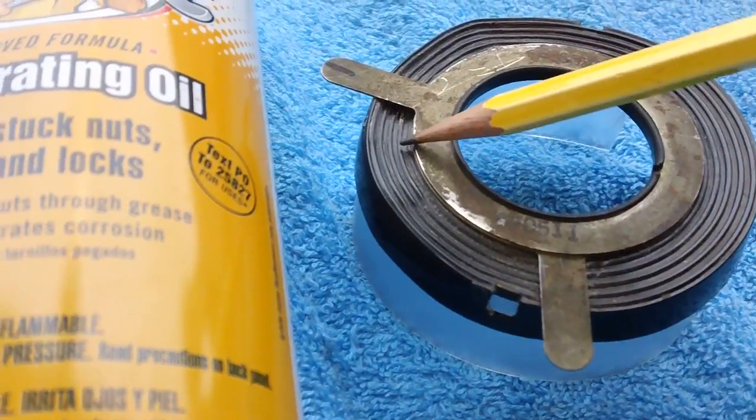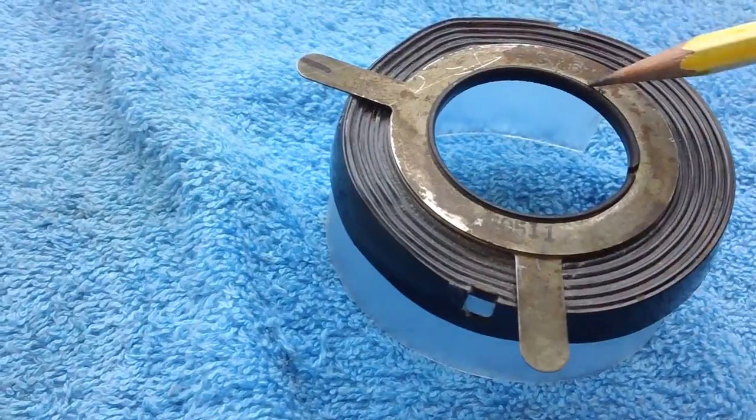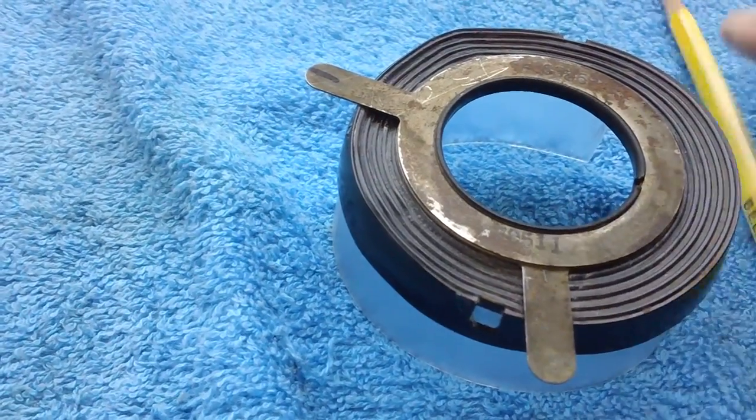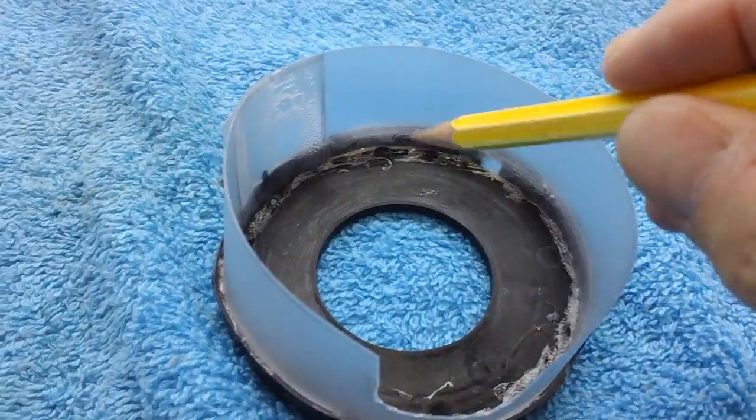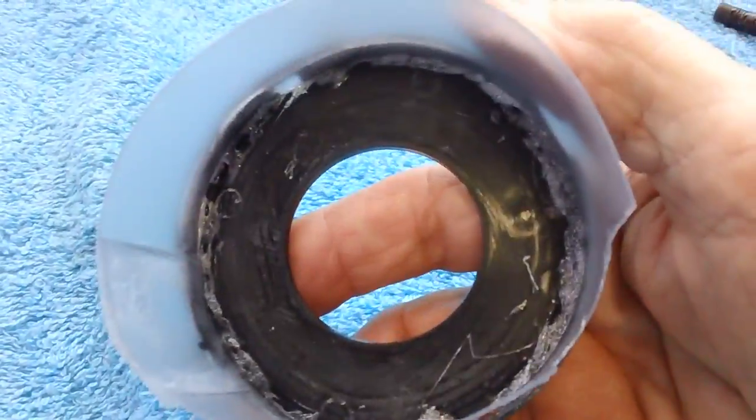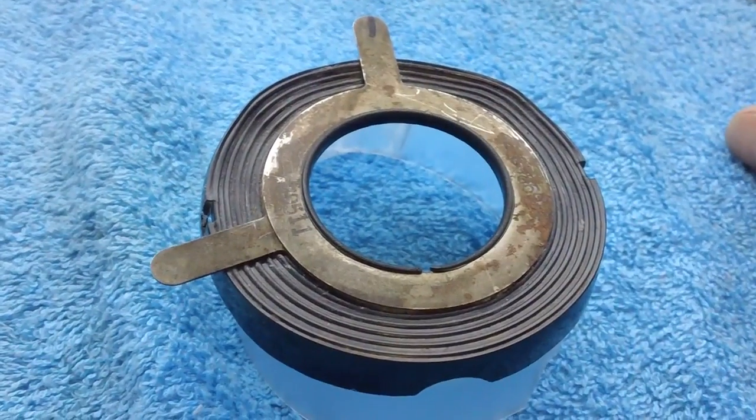Then I'm going to try to squirt some of this penetrating oil down between the layers and squirt a little bit of it around here and let it set. And if any of that penetrating oil gets down here on where I'm going to be gluing, I have some QD electronic cleaner. I'll just spray it out with that so we have good adherence. So wish me luck on that. We'll see what happens.